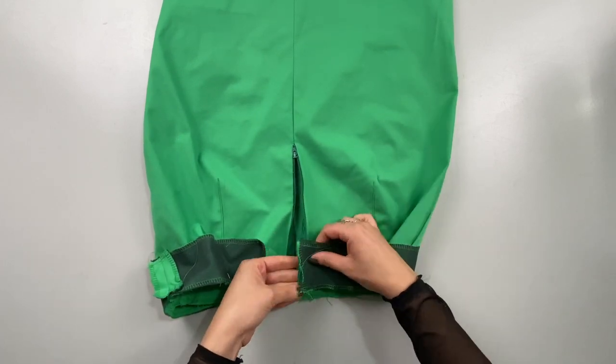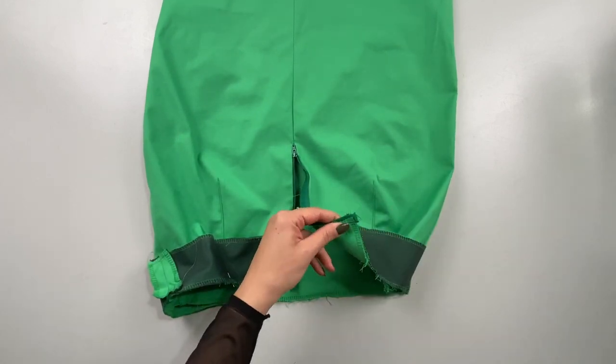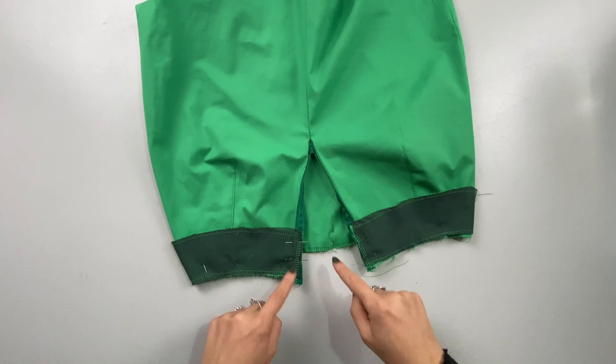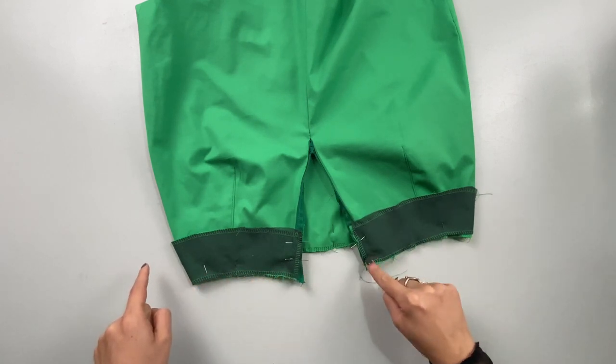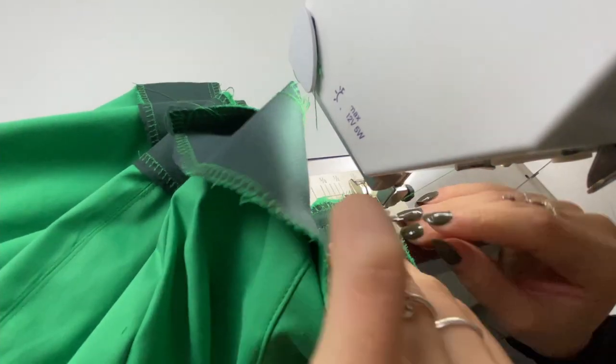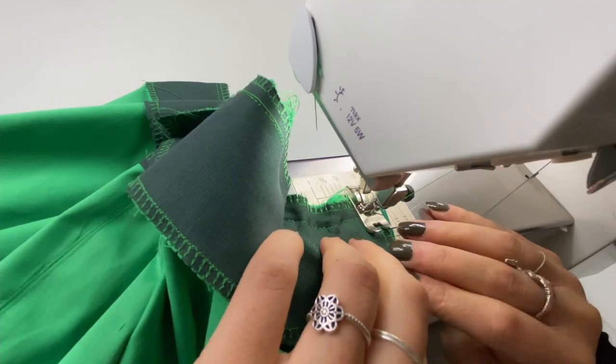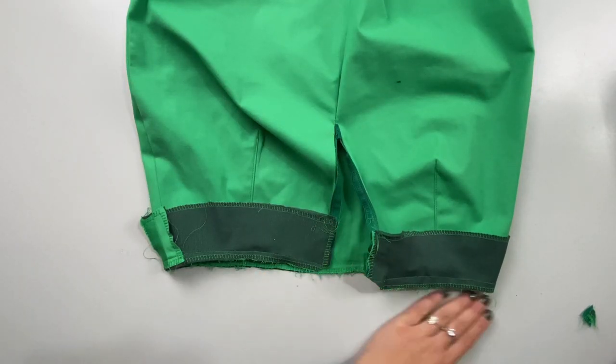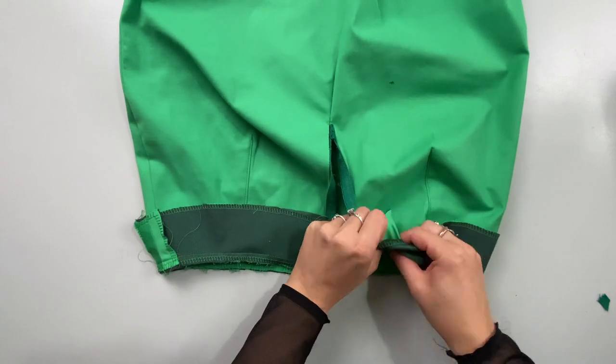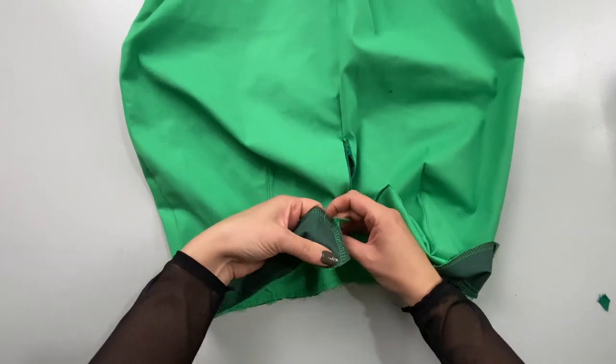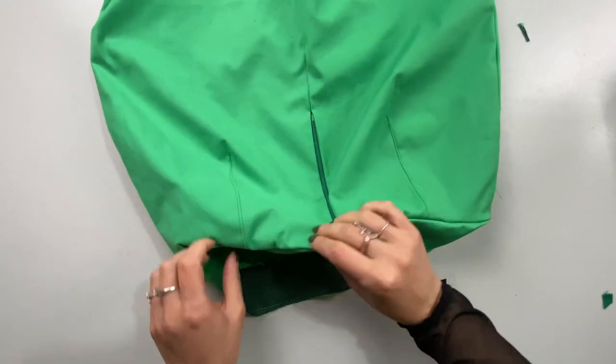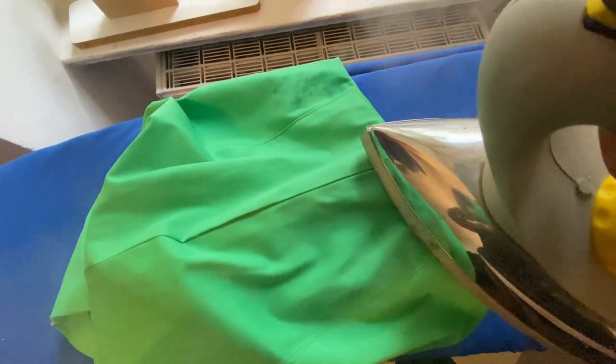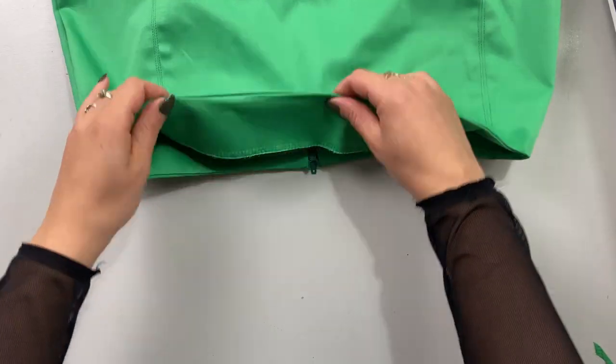After sewing the facing on, I cut off the corners to make it less stuffy when they are flipped around. The lining also needs an extra press to stay in place. I sew another top stitch at the top of the waistline.